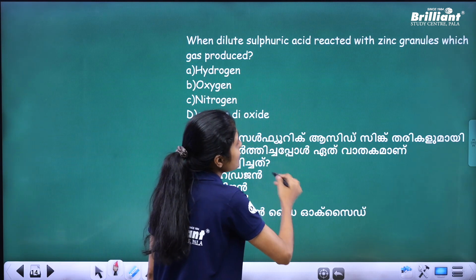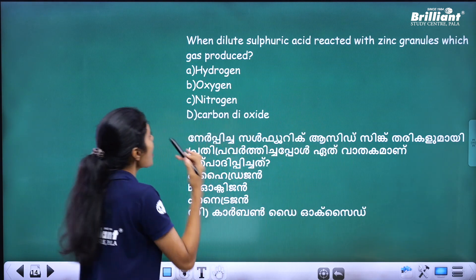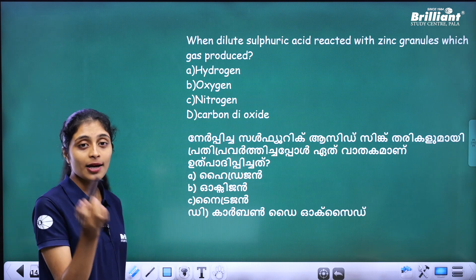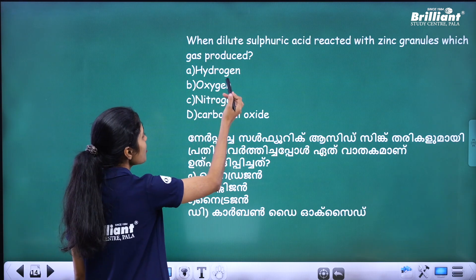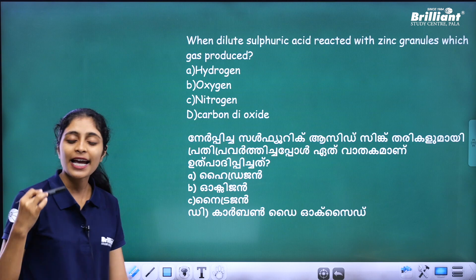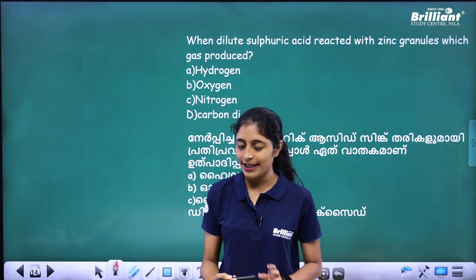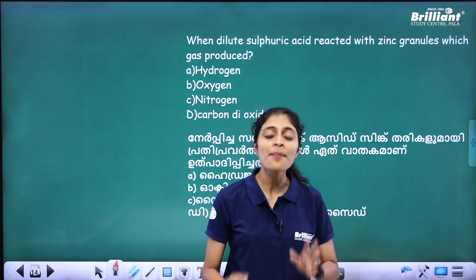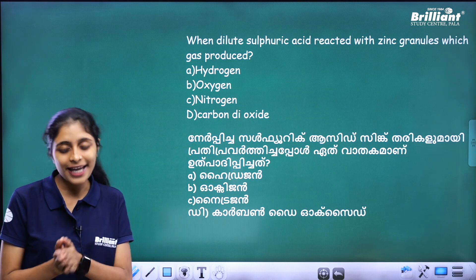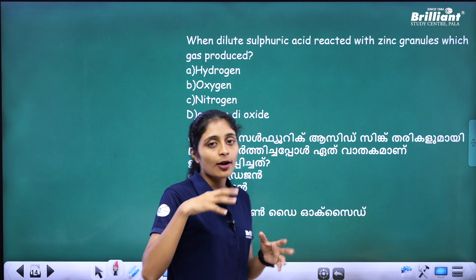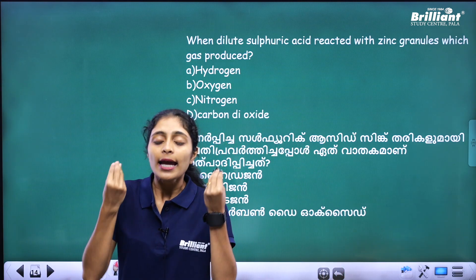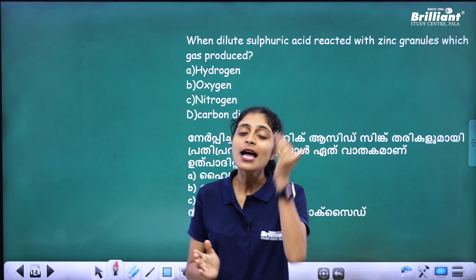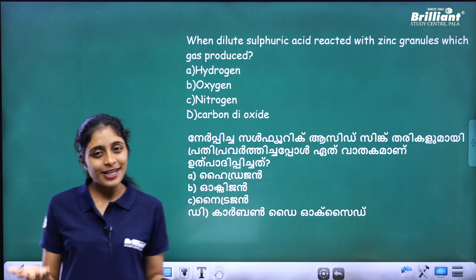When dilute sulfuric acid reacts with zinc granules, which gas is produced? The options are hydrogen, oxygen, nitrogen, and carbon dioxide. The answer is hydrogen gas. If you have any questions about this video, please comment.